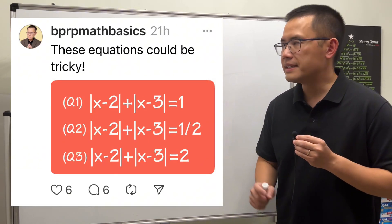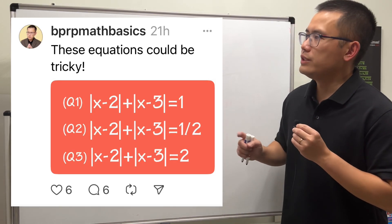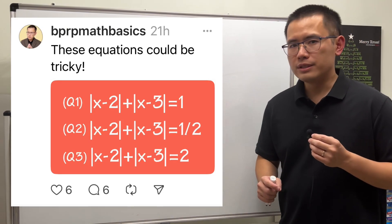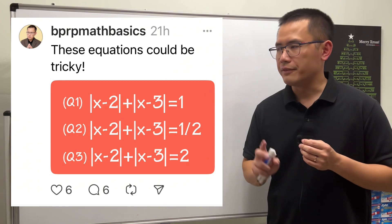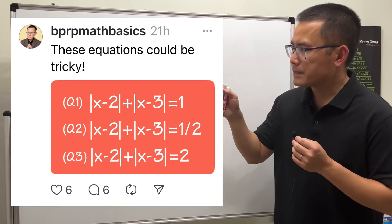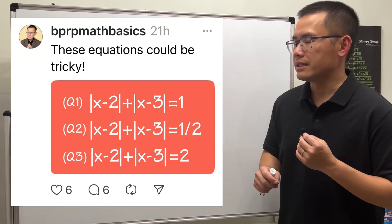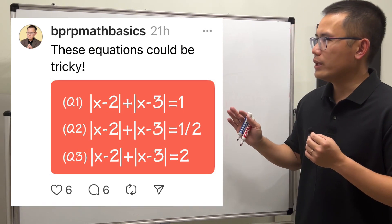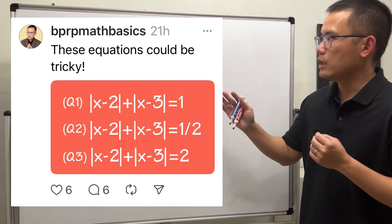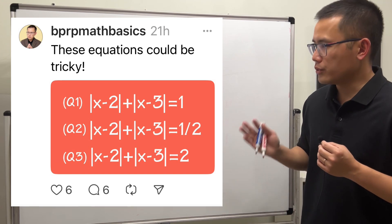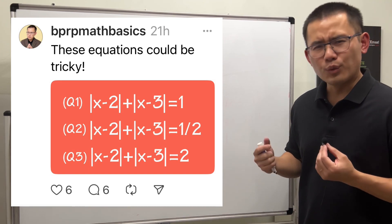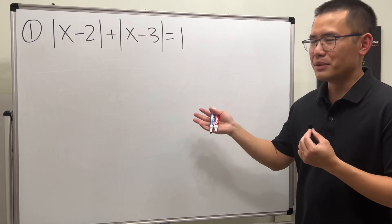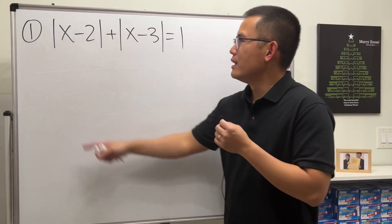Today, we are going to investigate these three absolute value equations. Notice that they all have the same two absolute values on the left-hand side, but on the right-hand side we have 1, 1/2, and 2. So what's going on? Well, let's have a look at the first one.